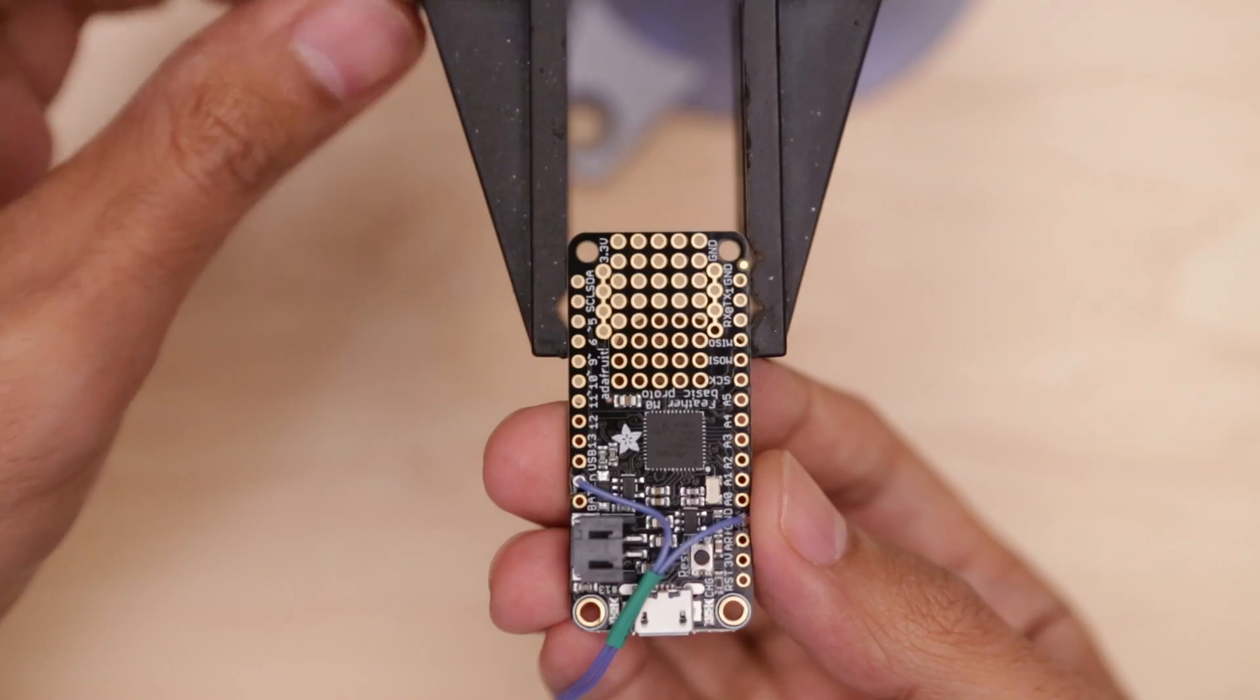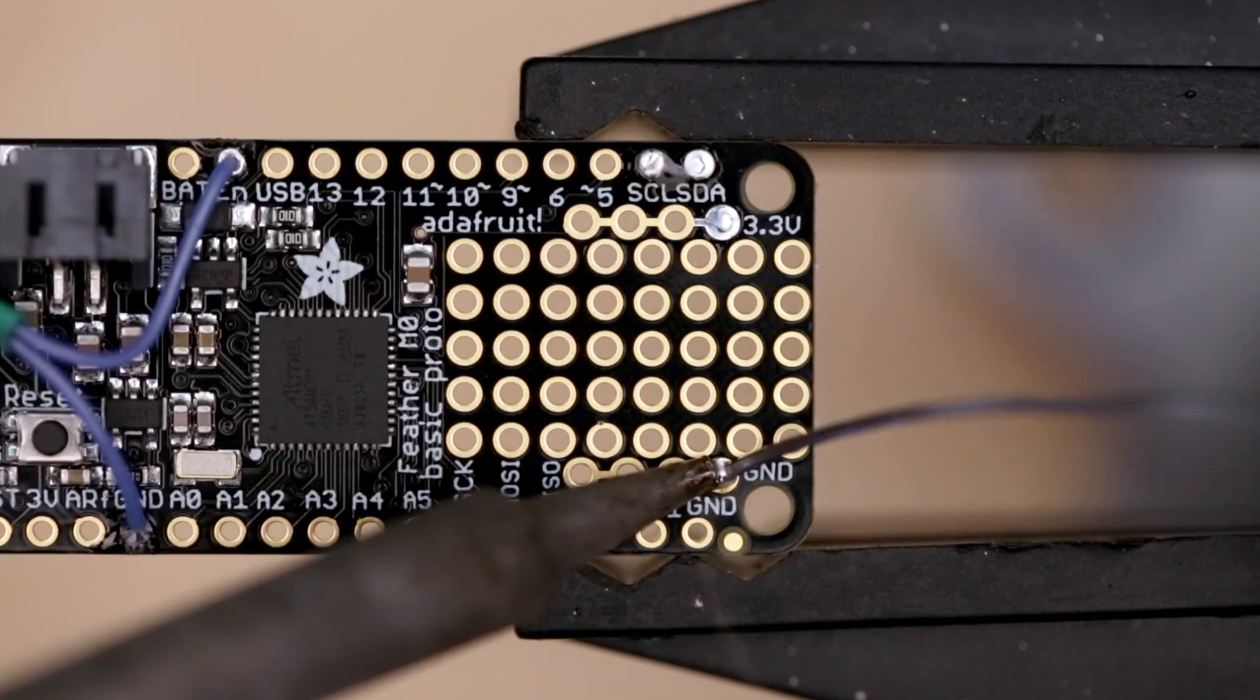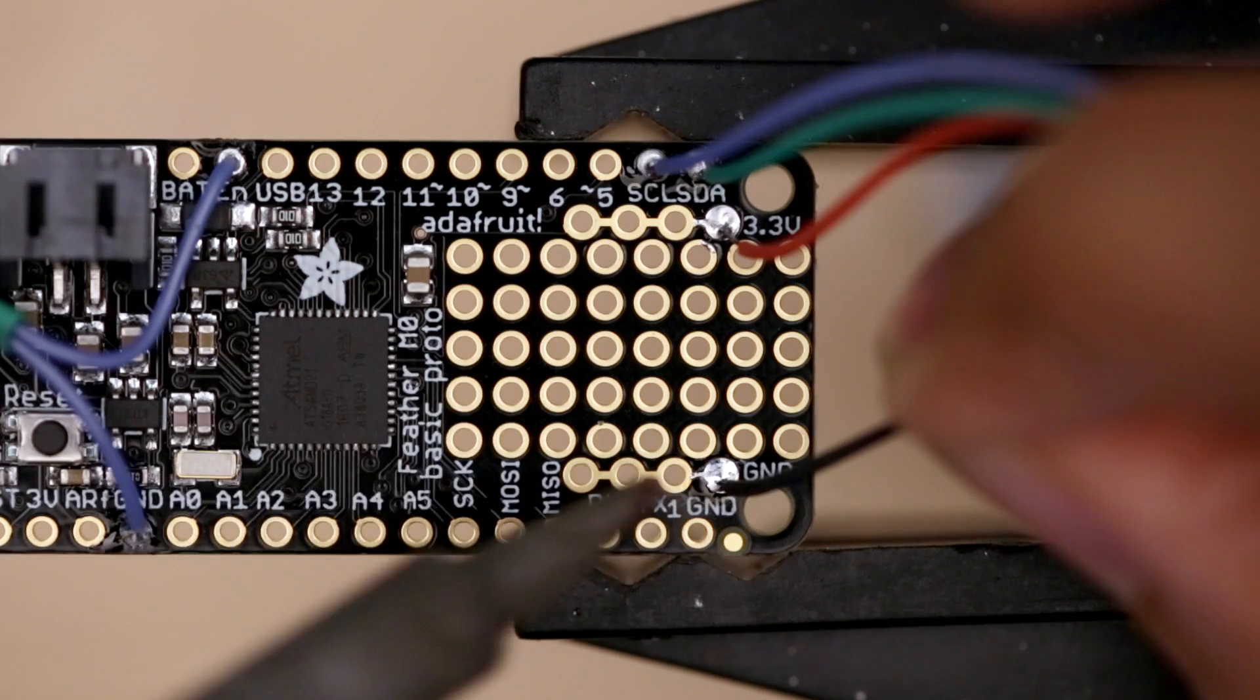And with the wire soldered to the driver we can then connect the LED matrix to the Adafruit Feather. The four connections will go to serial data, serial clock, voltage, and ground.